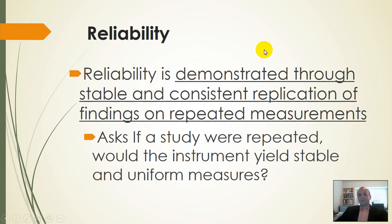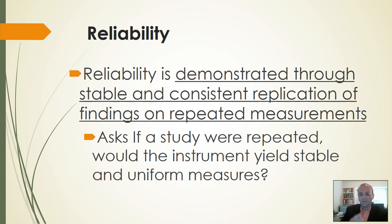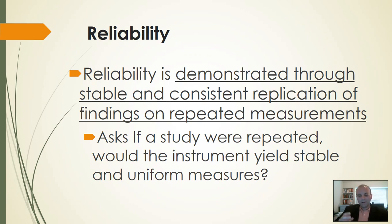Reliability is demonstrated through the stable and consistent replication of findings on repeated measurements. Essentially, your instrument — generally survey instruments in social sciences — should replicate the same findings. So if I administered you a questionnaire based on your feelings or attitudes towards your job or ice cream or whatever, the questionnaire should yield consistent results across time.